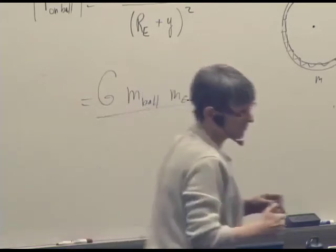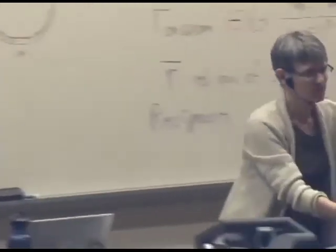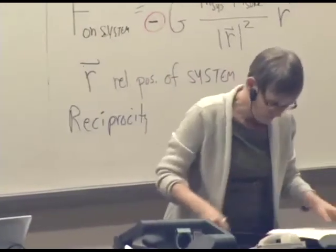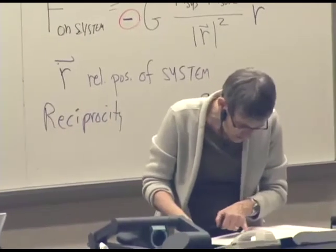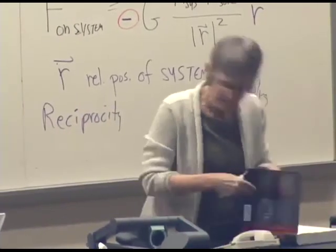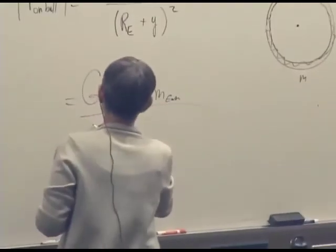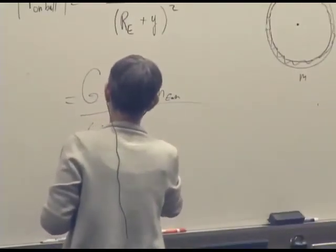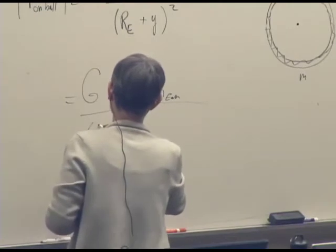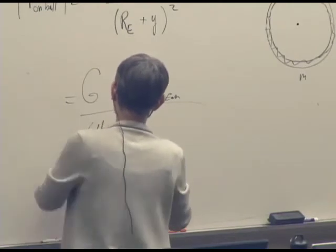So let's look up what the radius of the Earth is, another of these constants that conveniently in the back cover of the textbook seems to be 6.4 times 10 to the 6 meters. So we have 6.4 times 10 to the 6.